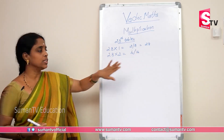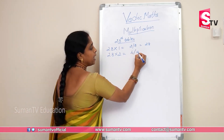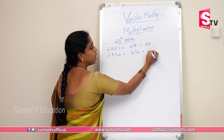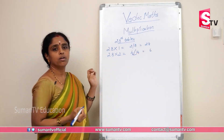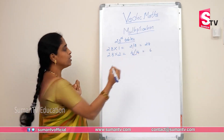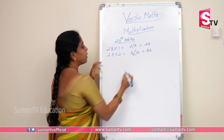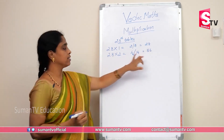Now we will use the Vedic method. Keep the last digit 6. We must add the carry 1 to 4. 1 plus 4 is 5. So 28 × 2 is 56.